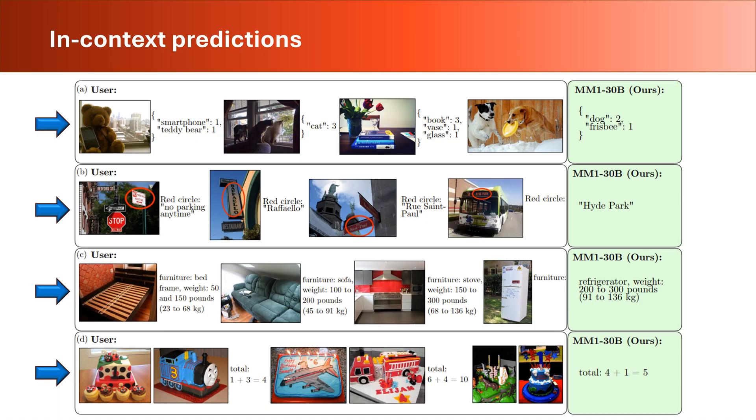First, let's see some examples of the MM1 model in making predictions about context of images. User presents an image to the model. The model responds with information about context of images, the number of main objects in the image, and so on. In the first row left, the model correctly detects one smartphone and one teddy bear in the image. In the next image, it detects three cats in the image.